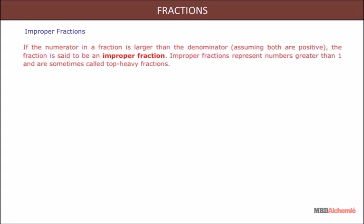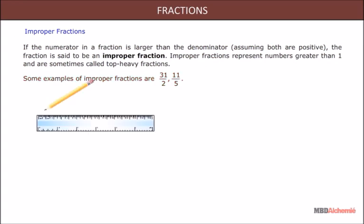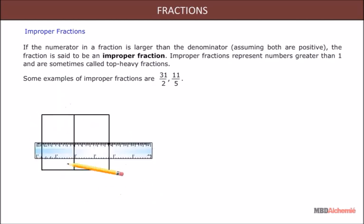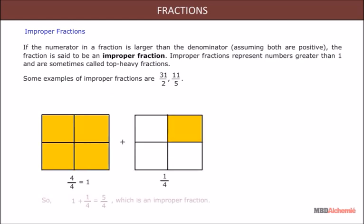Improper fractions: if the numerator in a fraction is larger than the denominator, assuming both are positive, the fraction is said to be an improper fraction. Improper fractions represent numbers greater than 1 and are sometimes called top-heavy fractions. Some examples of improper fractions are 31/2 and 11/5. So, 1 + 1/4 is equal to 5/4, which is an improper fraction.